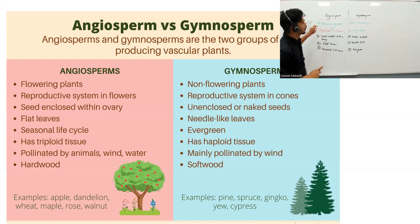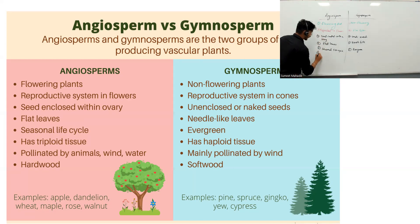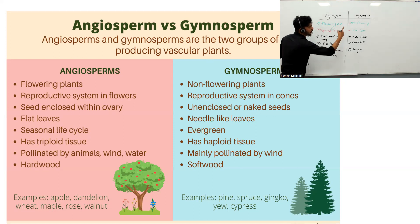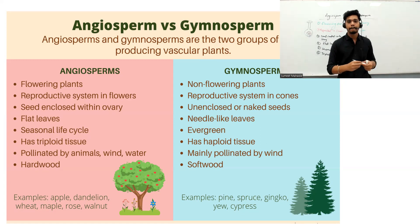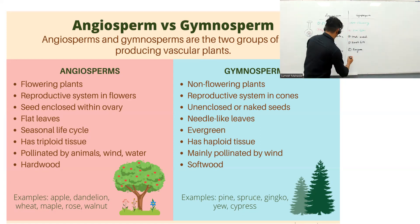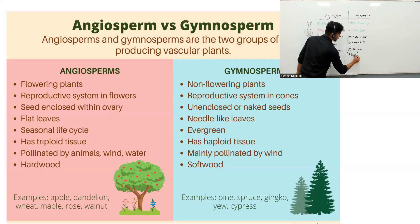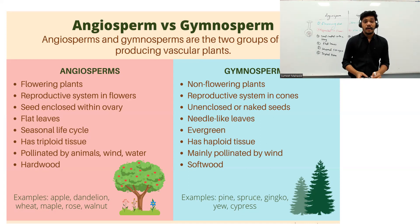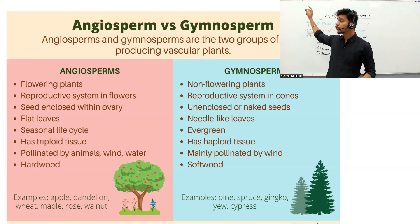Angiosperms have triploid tissue — that means three sets. In gymnosperms, haploid tissues are present. So triploid in angiosperms, haploid in gymnosperms.